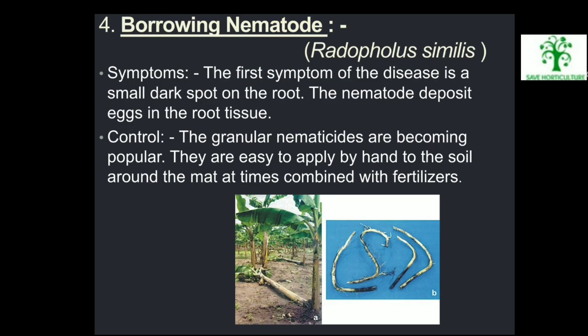Fourth pest — Burrowing Nematode (Radopholus similis): Symptoms: The first symptom of the disease is a small dark spot on the root. The nematode deposits eggs in the root tissue. Control: Granule nematicides are becoming popular; they are easy to apply by hand to the soil around the mat, sometimes combined with fertilizers. Loss by burrowing nematode in banana is visible in the picture.